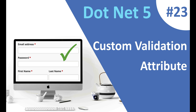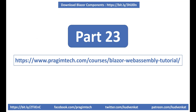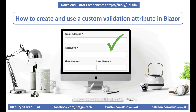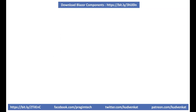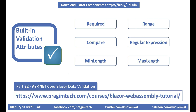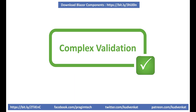Hey guys, I am Venkat and this is part 23 of the web development with Blazor video series. In this video, we'll discuss how to create and use a custom validation attribute in Blazor. Blazor has several built-in attributes for model validation, which we discussed in part 22. If you have a complex validation requirement that you cannot implement using built-in attributes, you can create a custom validation attribute and reuse it across projects, even in a separate class library project.